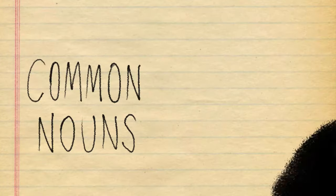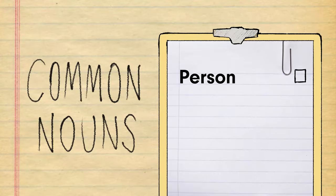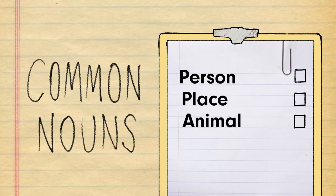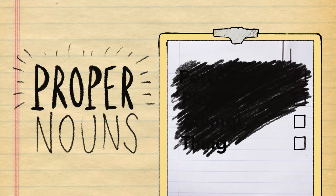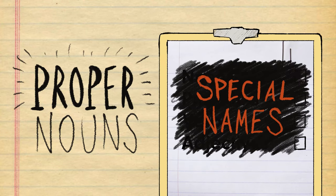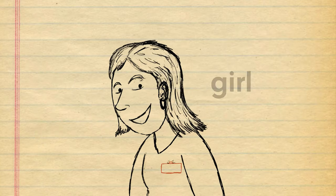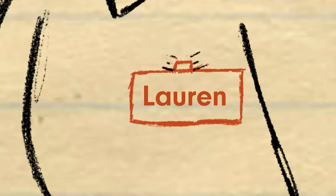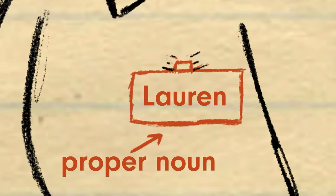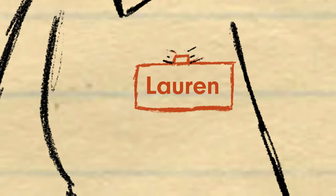Common nouns refer to a person, place, animal or thing, while proper nouns are special names for these. For instance, I identify as a girl, so that is my noun, but my name is Lauren, so that's my proper noun.